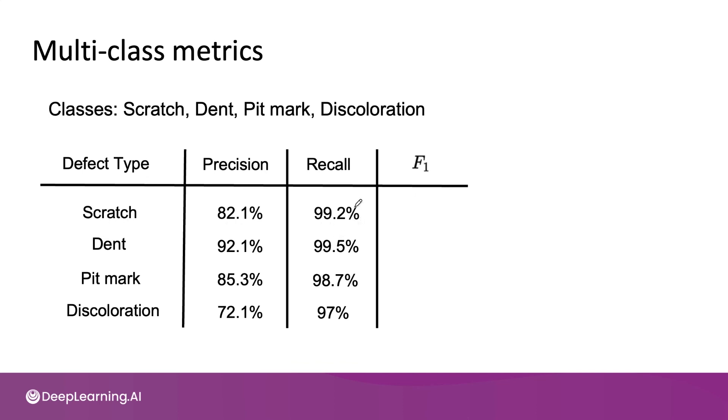You find in manufacturing that many factories will want high recall, because you really don't want to let the phone go out that is defective. But if an algorithm has slightly lower precision, that's okay. Because through a human re-examining the phone, they will hopefully figure out that the phone is actually okay. So many factories will emphasize high recall.